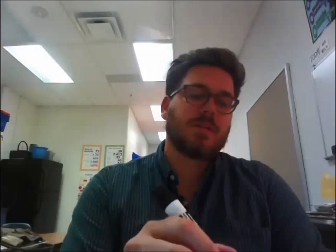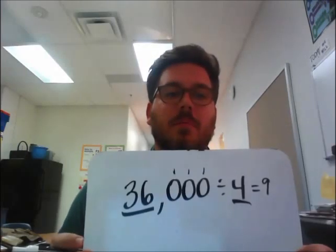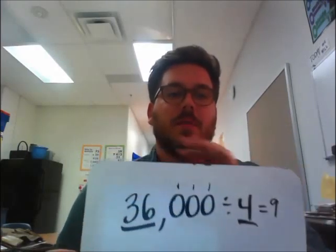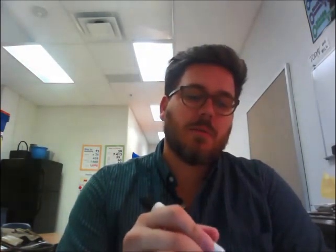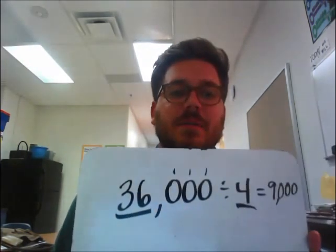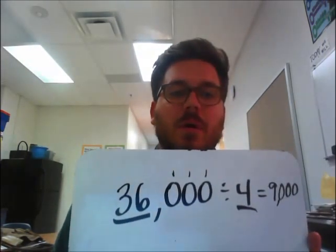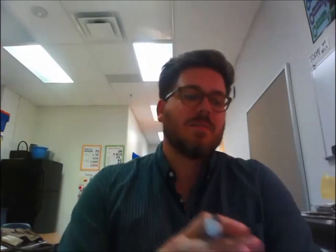So we put 9 as our answer for the base problem, but we can't forget about those 0s, so we have to add the three 0s in. Then we can answer our problem: 36,000 divided by 4 is 9,000.